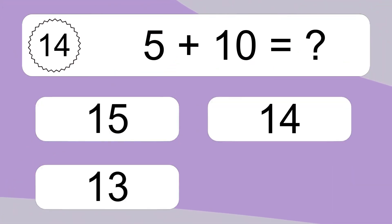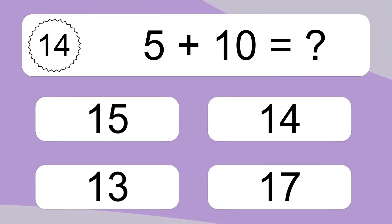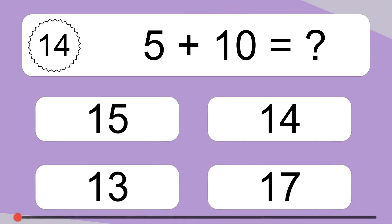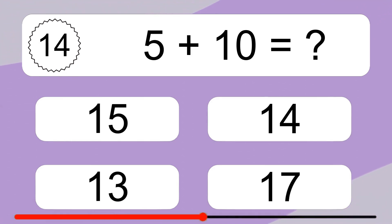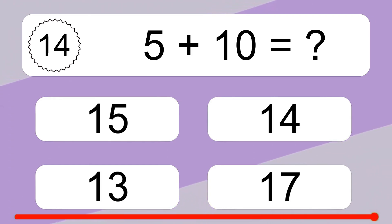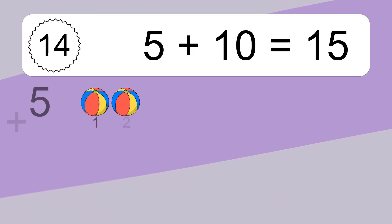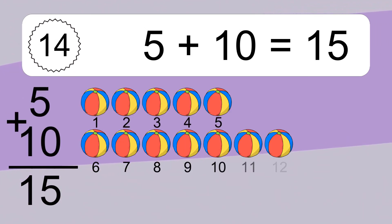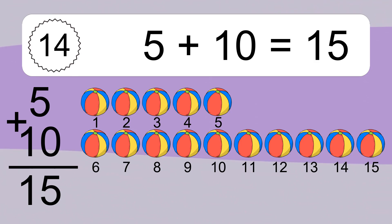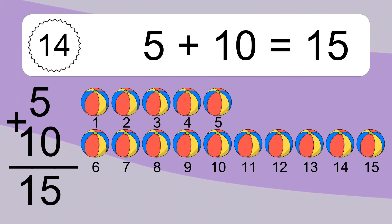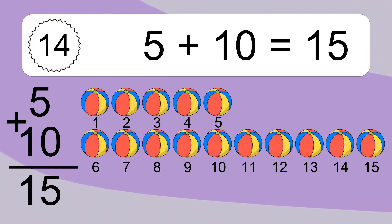5 plus 10 equals what? 5 plus 10 equals 15. Let's count it. 1, 2, 3, 4, 5, 6, 7, 8, 9, 10, 11, 12, 13, 14, 15.